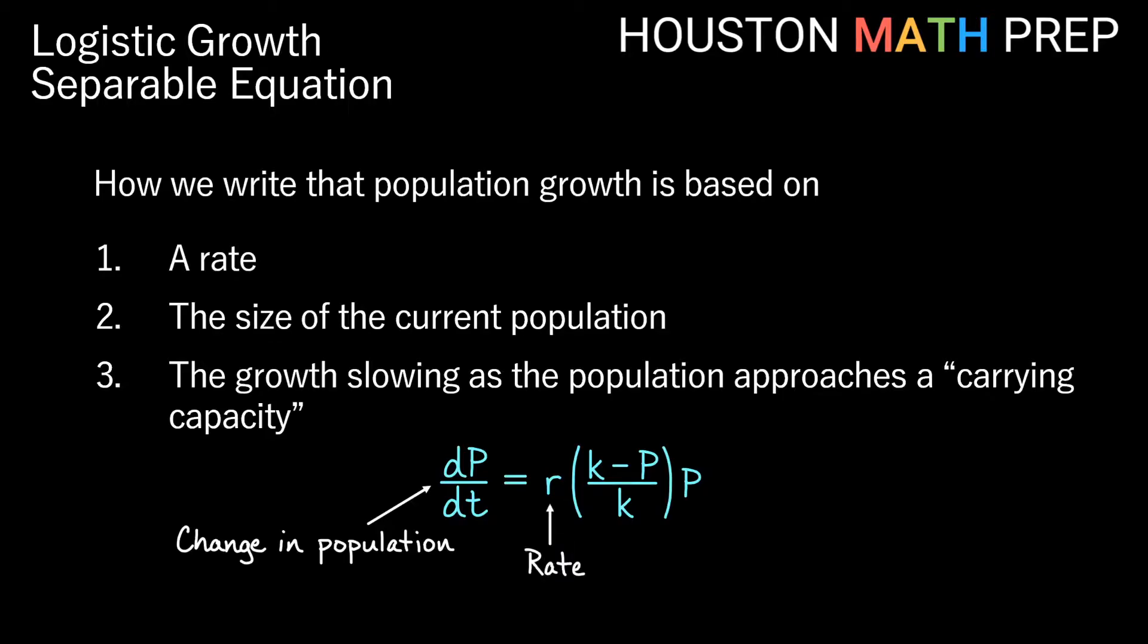So our r is going to be our rate of growth. So depending on the circumstance, we might have a different rate there. Our P on the far right side there is just our current population as it stands at that point in time. And then this last piece here in parentheses is k minus P over k. We know the P part is the current population, but this k is just some constant. It's called the carrying capacity.